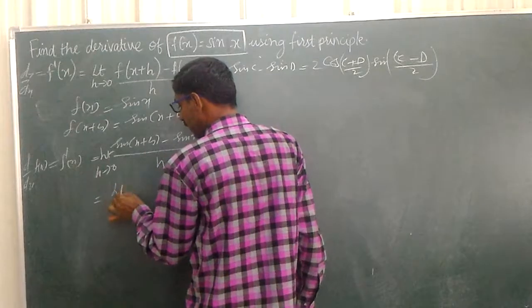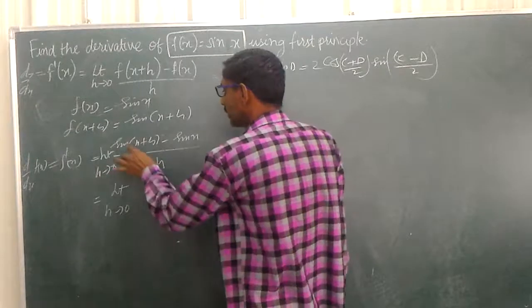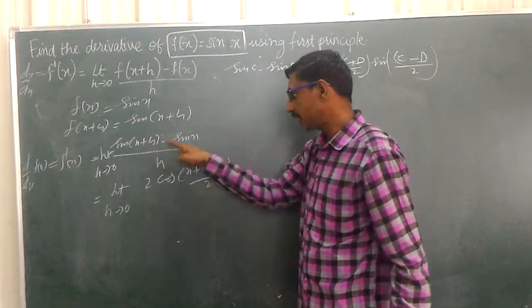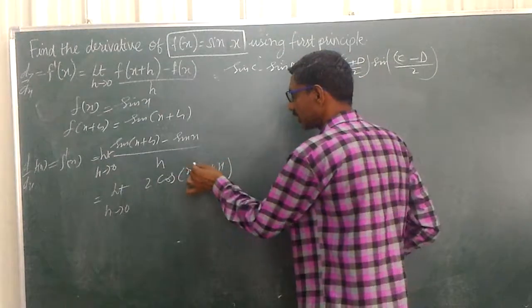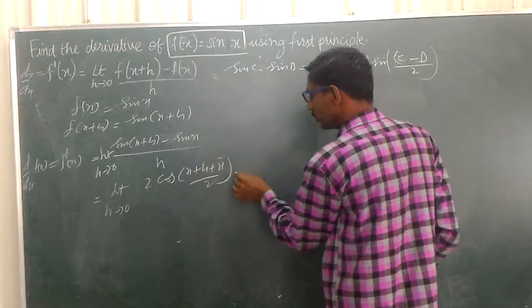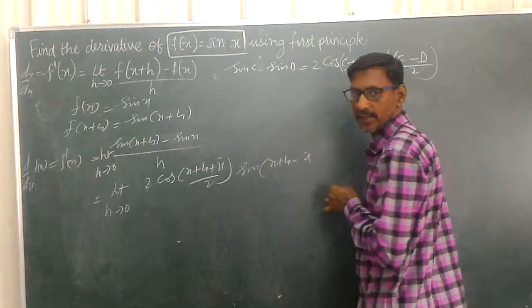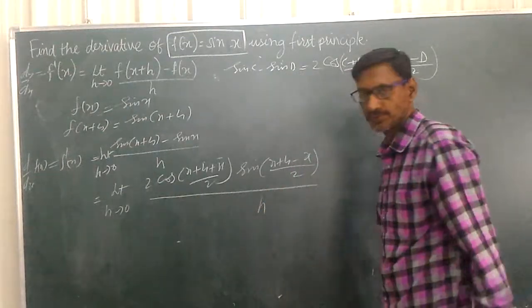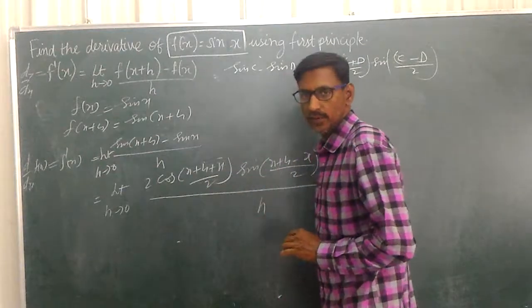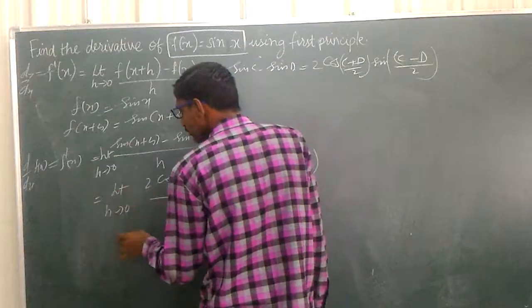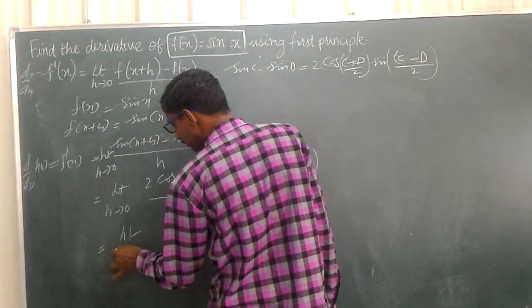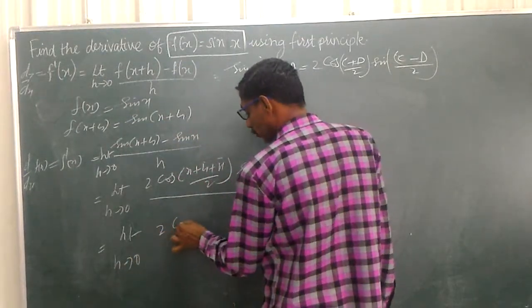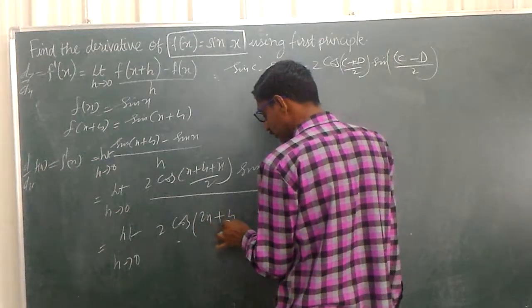Substituting C = x+h and D = x: we get 2 cos((x+h+x)/2) · sin((x+h-x)/2), divided by h. Simplifying the cosine argument: (2x+h)/2.